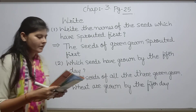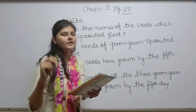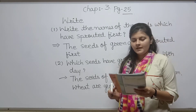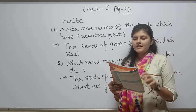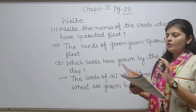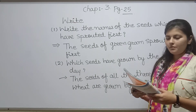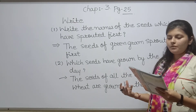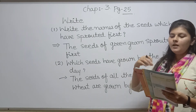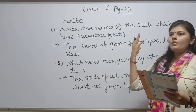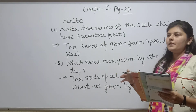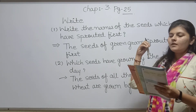On page number 25 there is a little activity: take two or three monocot and dicot seeds and sow the seeds in a tea cup, plastic bag, or open space around your house or school. So what you have to do is take monocot and dicot seeds and take a cup, plastic bag, or an open place around your house.